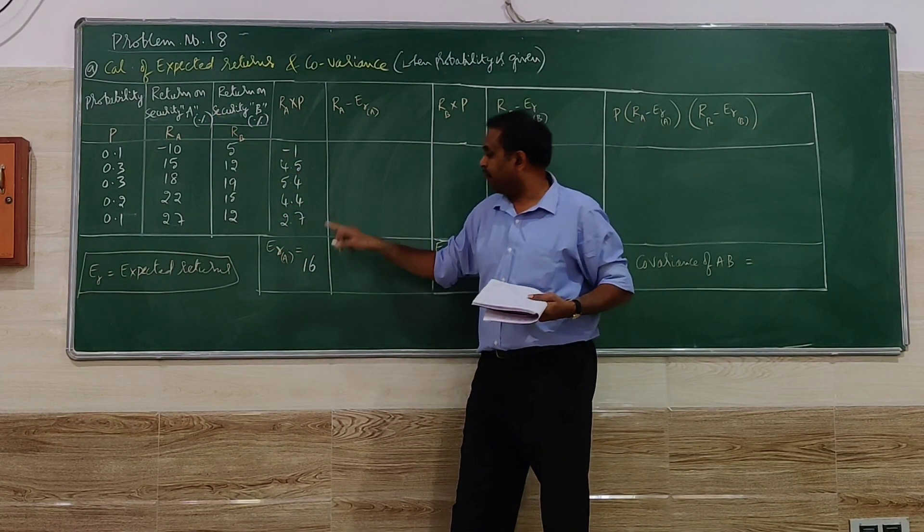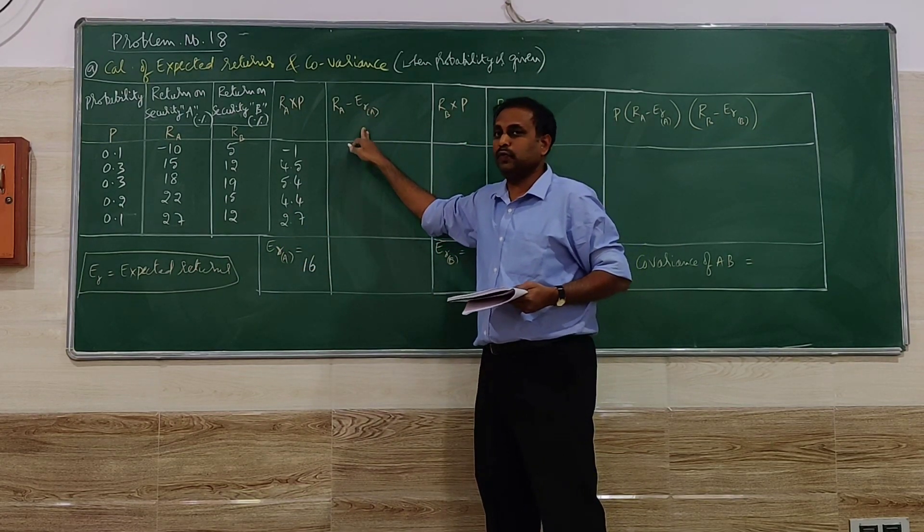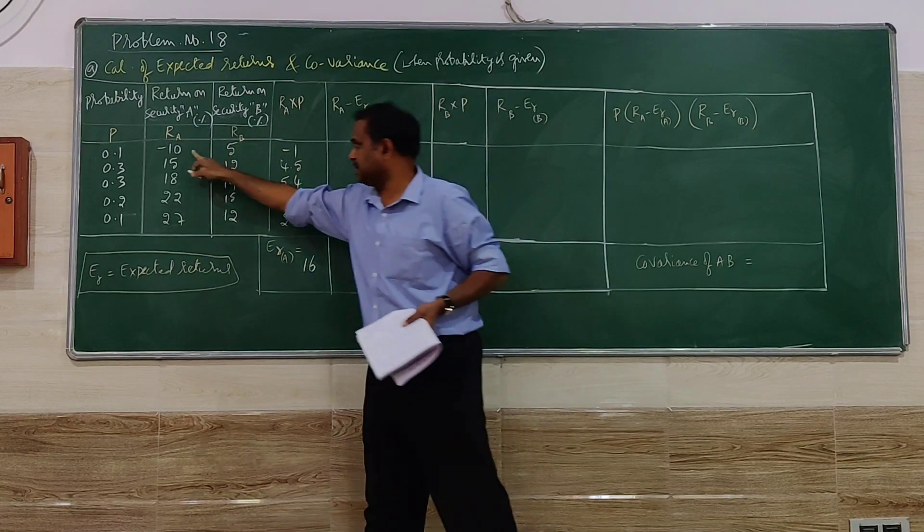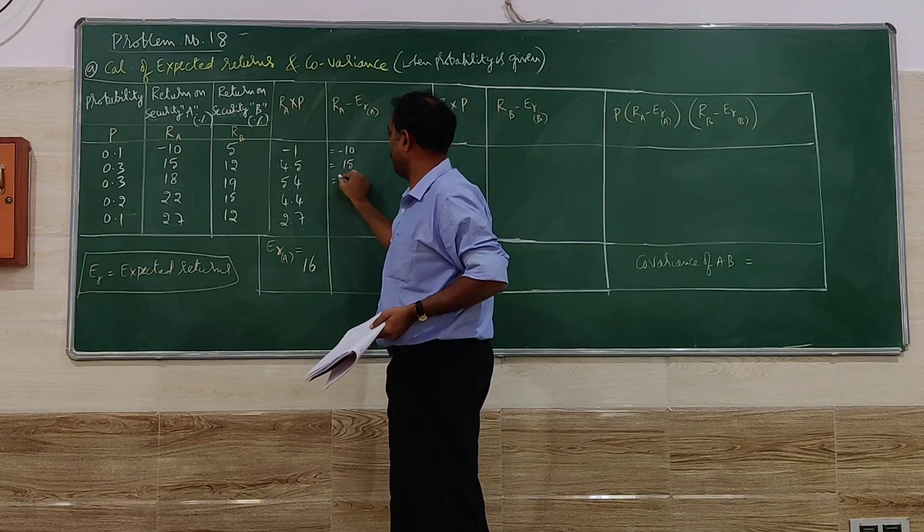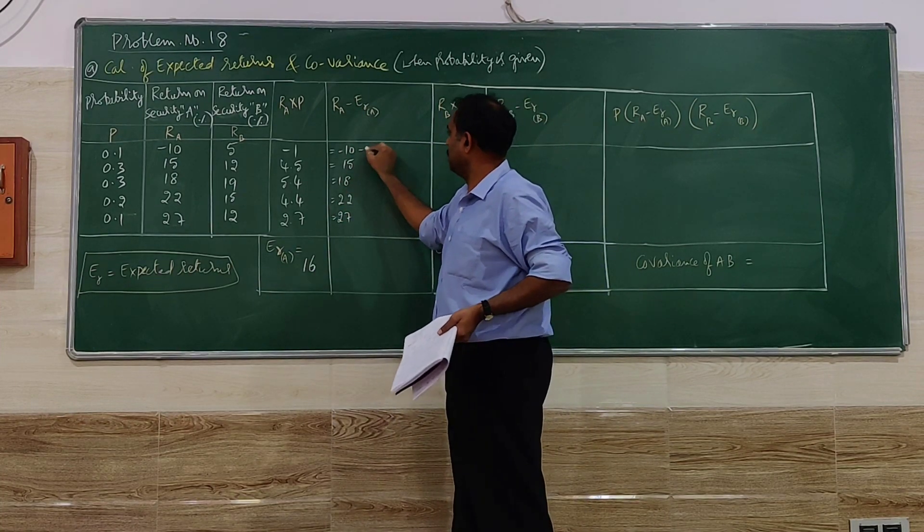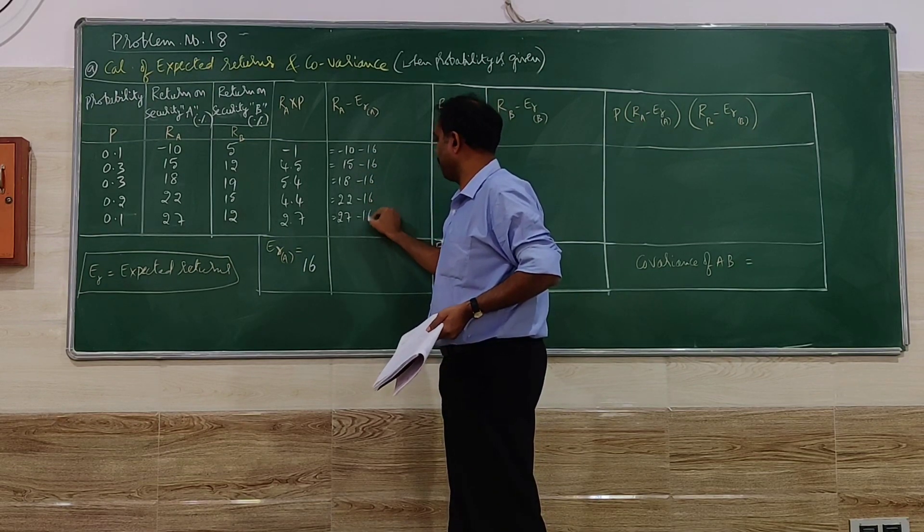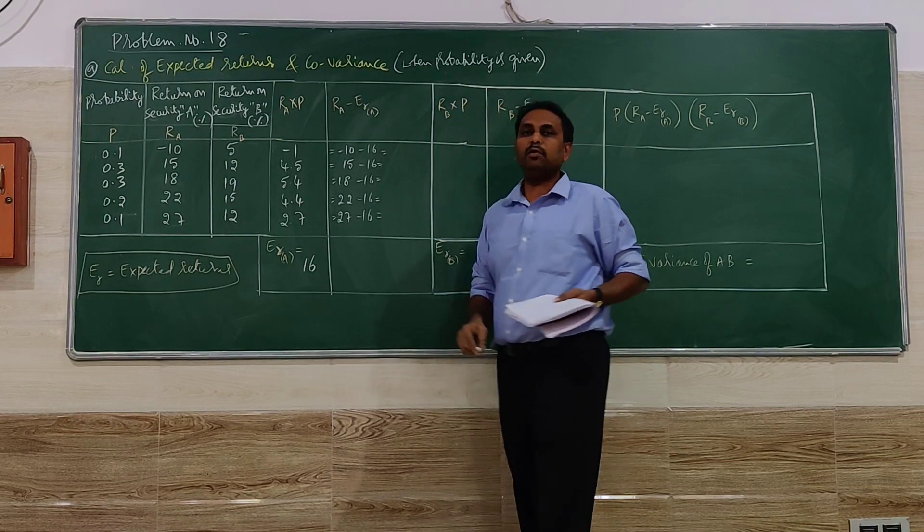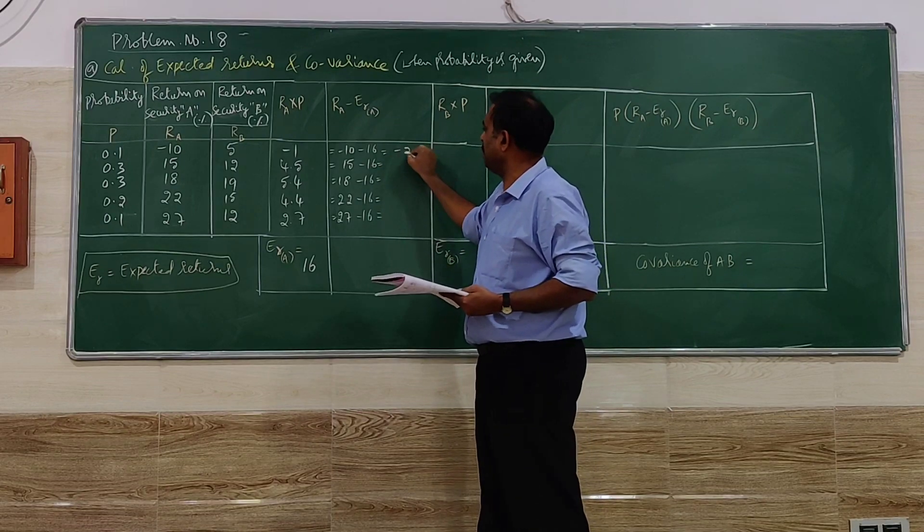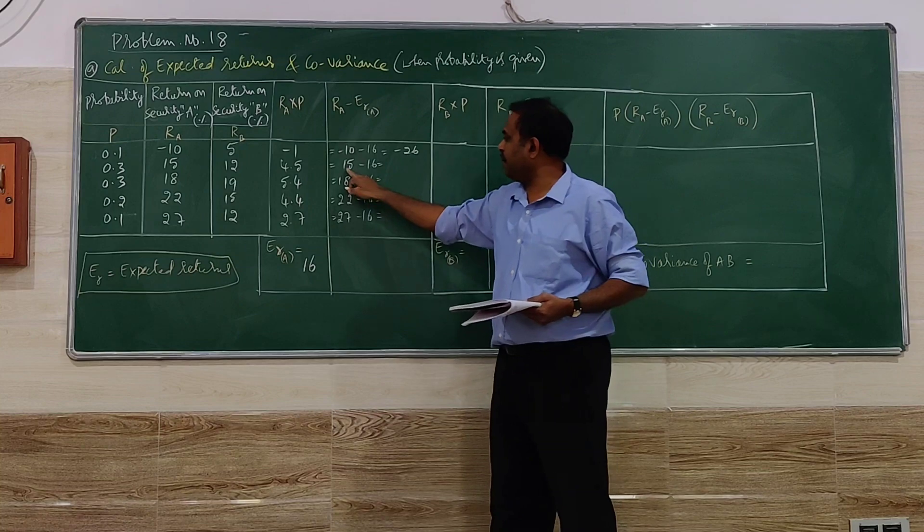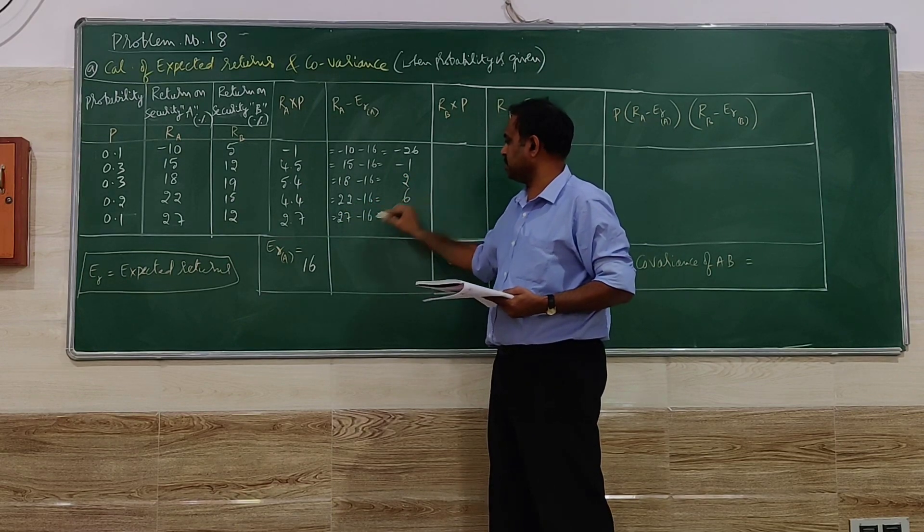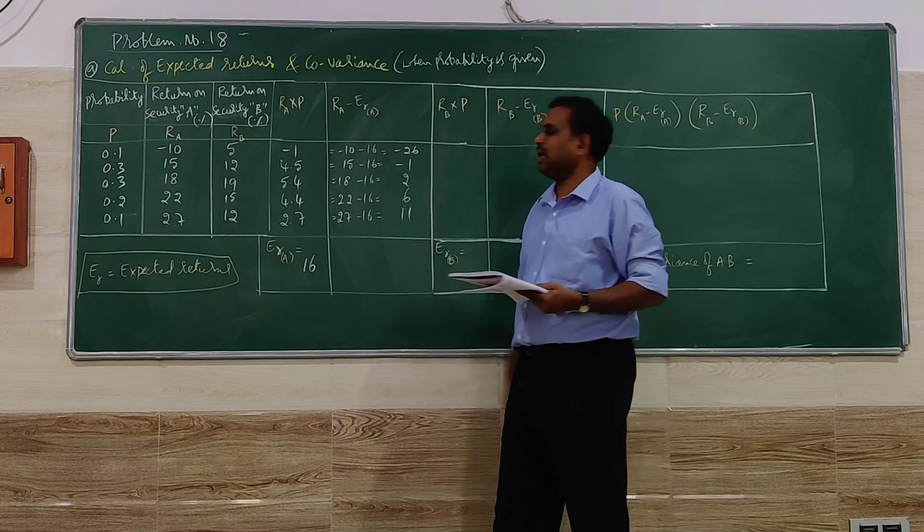With the help of that, we have to go further step. This step will be useful for calculation of the covariance. So what is this here? RA minus E(RA), that is minus 16. So we have to write them when the minus values are there and we have to work. Minus 10 minus 16, it is going to be minus 26. Next, 15 minus 16 is minus 1, 18 minus 16 is 2, 22 minus 16 is 6, 27 minus 16 is 11. So no need of totaling this at present, we will take these values later.